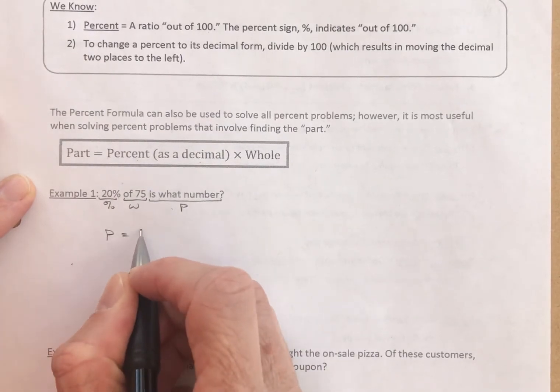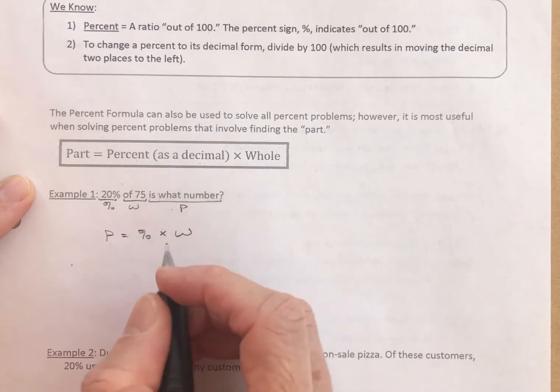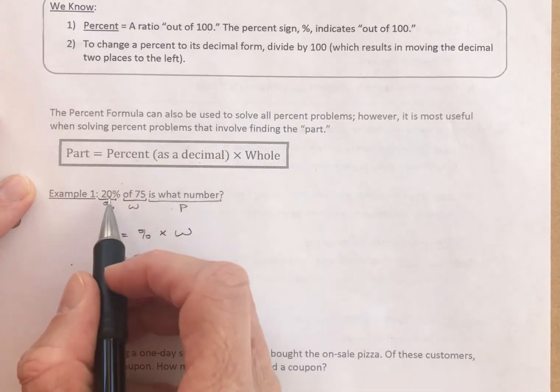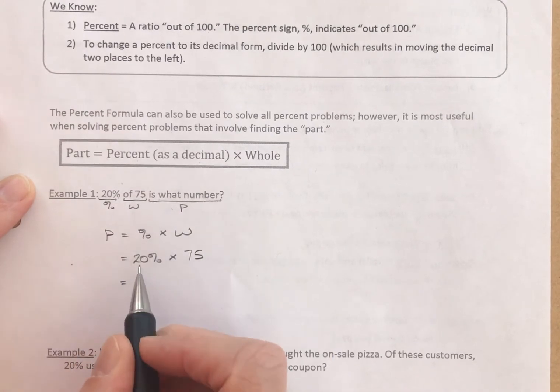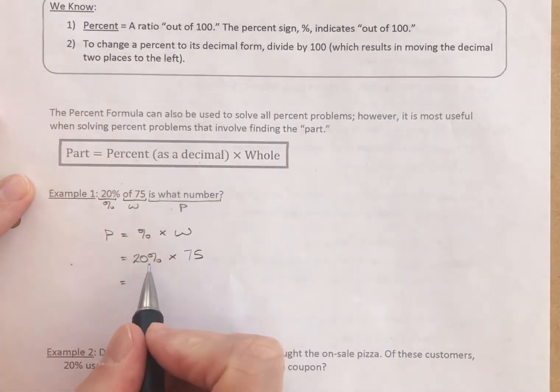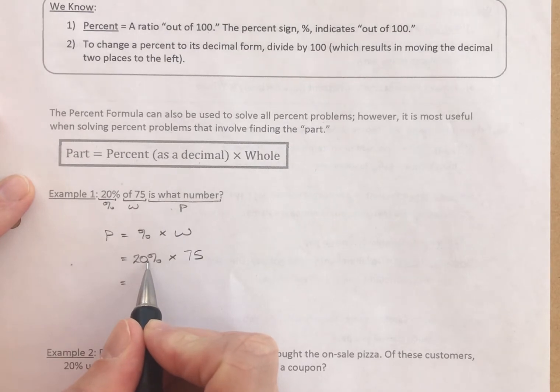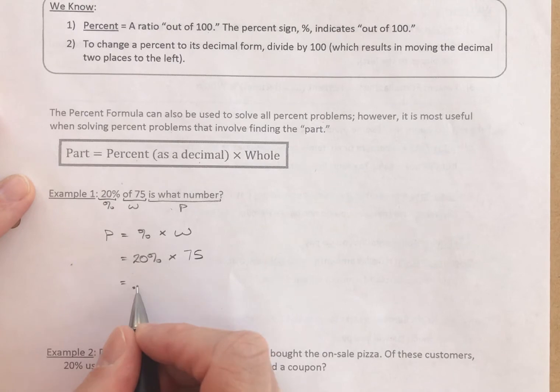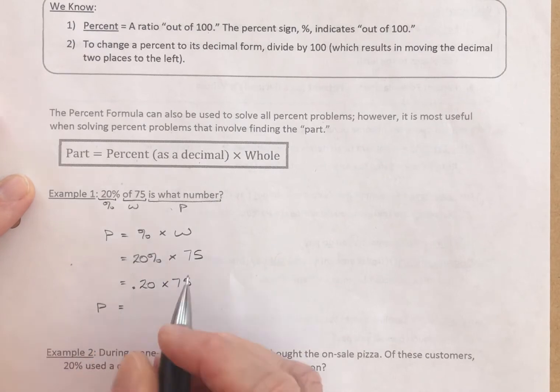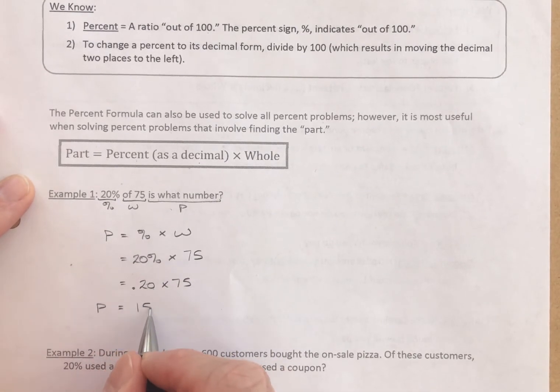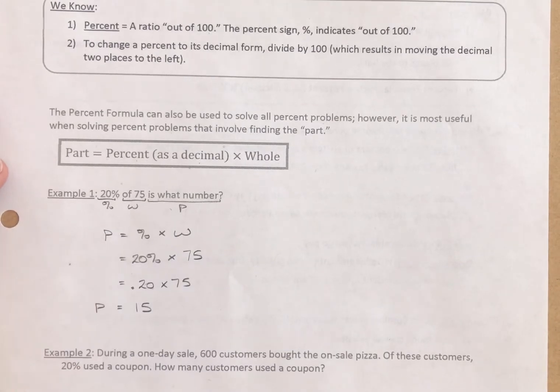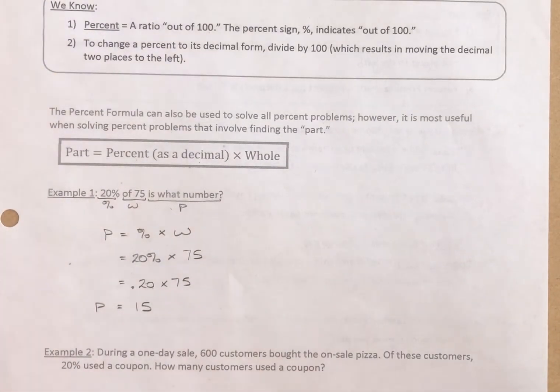Part equals percent times the whole. So it equals the percent, which in this case is 20%, times the whole, in this case is 75. Now, here's where we need to recognize to change the percent to its decimal form, divide by 100. The decimal is right here, after the 20. Dividing by 100 means it moves two places to the left. So, this is going to be 0.20 times 75. And so, the answer to our question is 0.20 times 75, which is 15. 20% of 75 is 15. So, that's the method for using the percent formula to find the part.